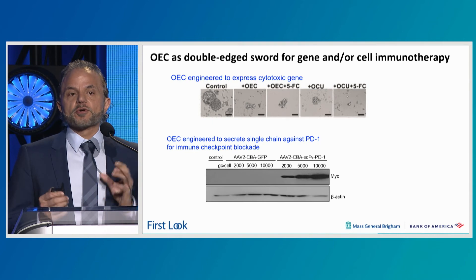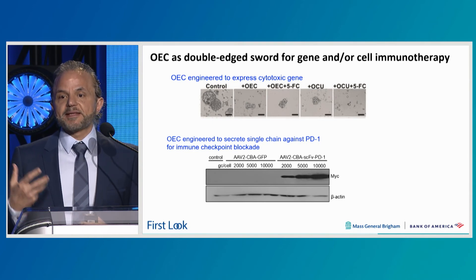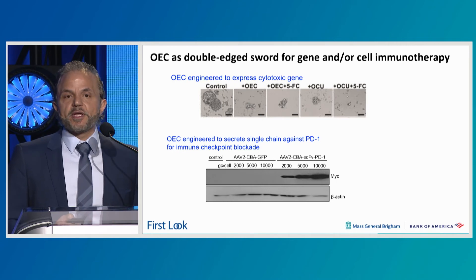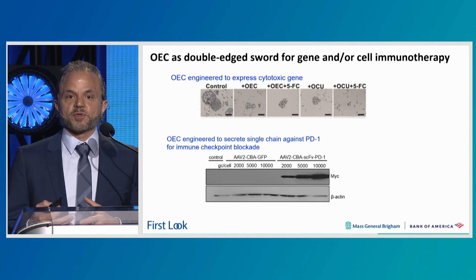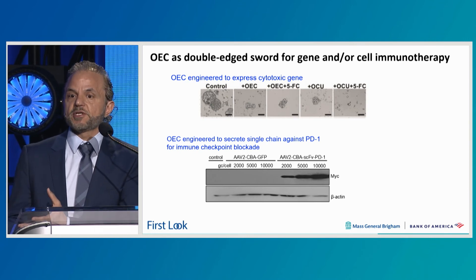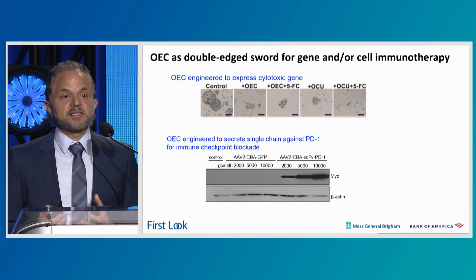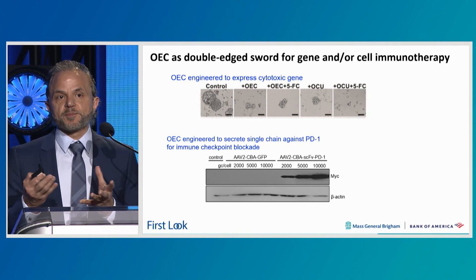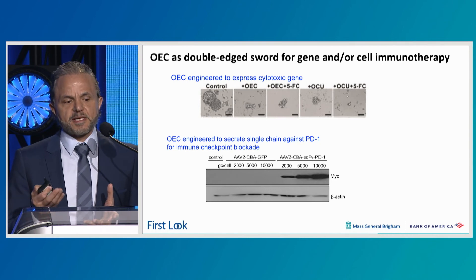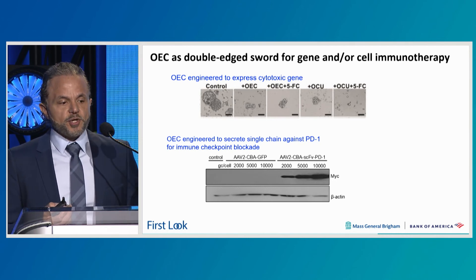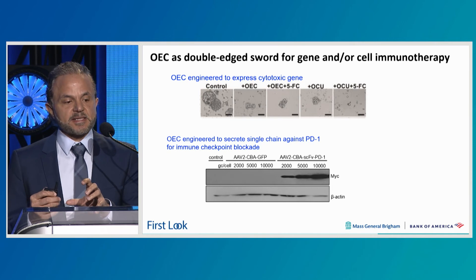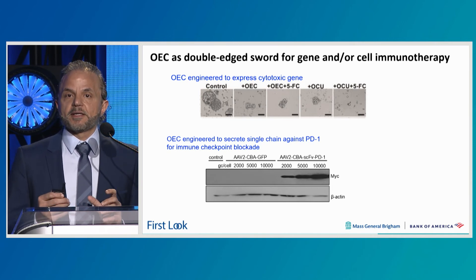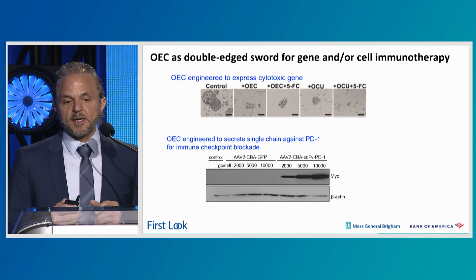So the cells on their own were great — but can we make them better to fight the tumor? Indeed, we can use them for gene therapy, where we modify them with an AAV — adeno-associated viral vector — to express a cytotoxic gene. When these cells home to the tumor, they deliver the cytotoxic gene while simultaneously recruiting immune cells to the tumor site. And since brain tumors and other tumor types are immunosuppressive due to immune checkpoint markers like PD-1 or PD-L1 on the tumor, we can engineer these OEC cells to secrete on-site, at the tumor site, single-chain antibodies against PD-1 for immune checkpoint blockade. Now we have a much more efficient therapeutic with OECs.